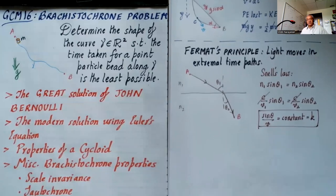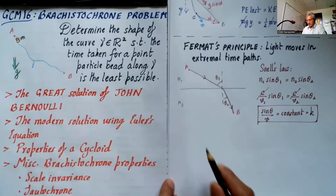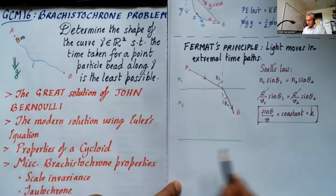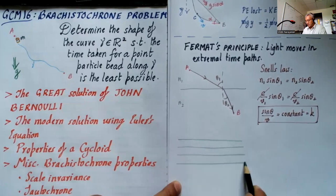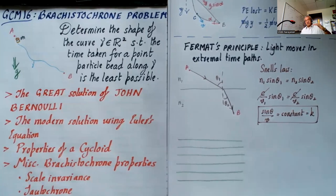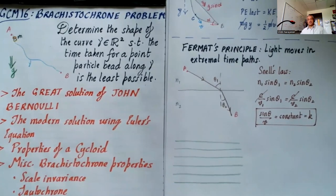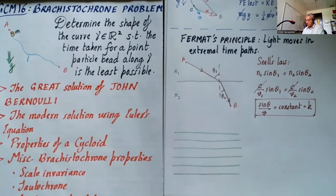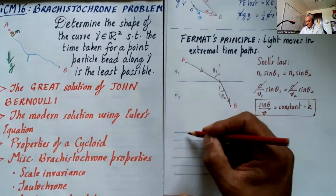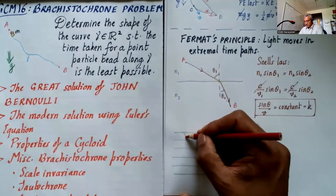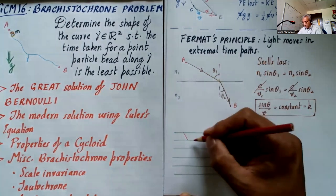So what did John Bernoulli do? He made the amazing leap of insight. He said: forget about the bead, forget about the wire — let's think about light going down in a medium where the speed of light increases as you go down. Imagine some kind of molasses where the top surface is really murky and as you go down it gets lighter. Because the refractive index is decreasing, the light is going to bend outward from the normal.